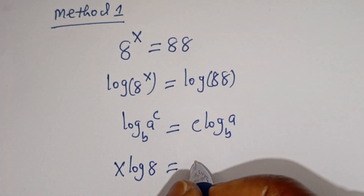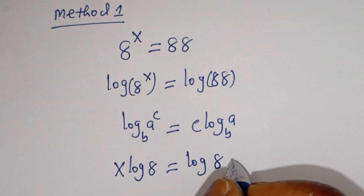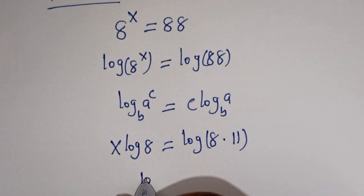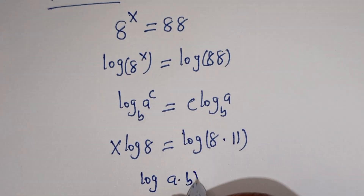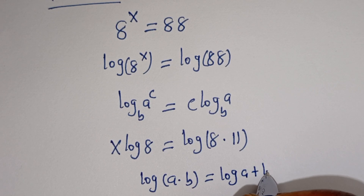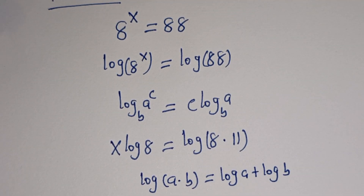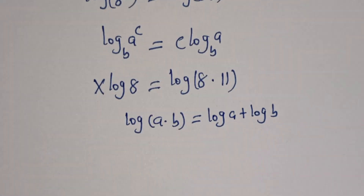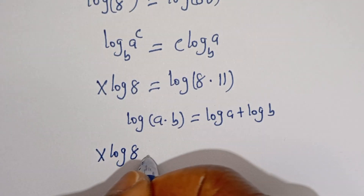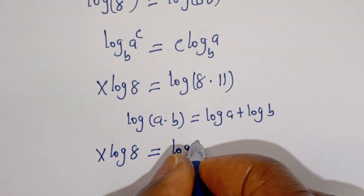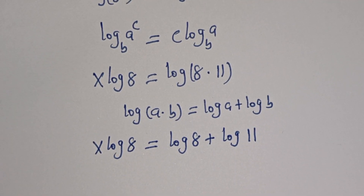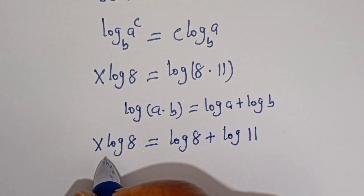Now log 88 can be written as log of 8 multiplied by 11. Then if you have log a multiplied by b, this is equal to log a plus log b. So here we have s log 8 is equal to log 8 plus log 11.